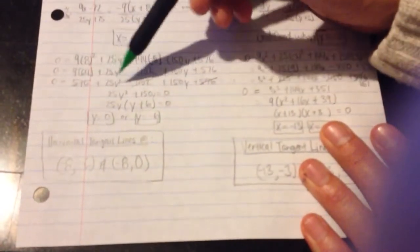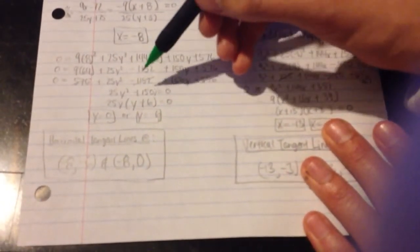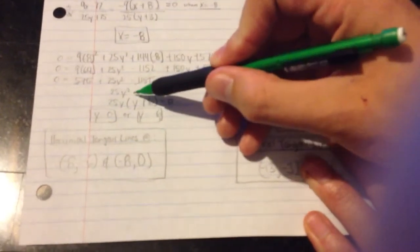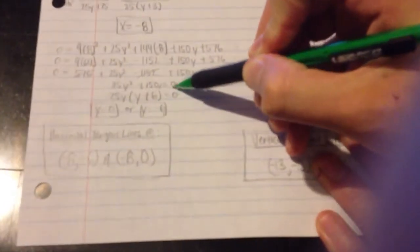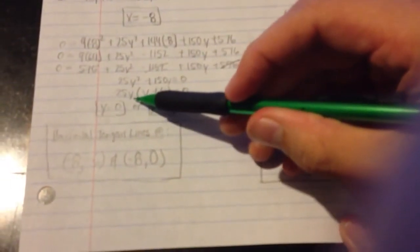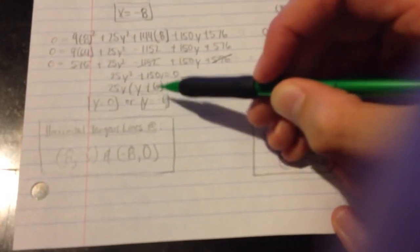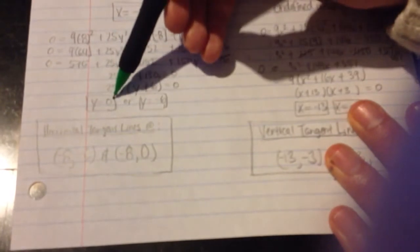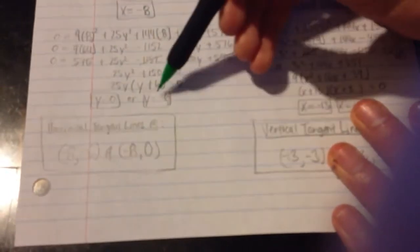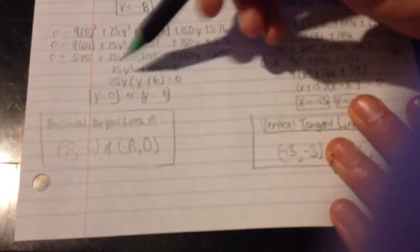It's a whole lot of adding and multiplying with big numbers, but it all works out really nicely. I'm left with 25y squared plus 150 equals 0. I can factor out 25, leaving me with y plus 6 on the inside. So y can either be 0, or y can also be negative 6, as my possible values for the horizontal tangent lines.